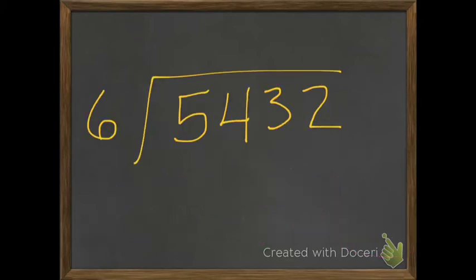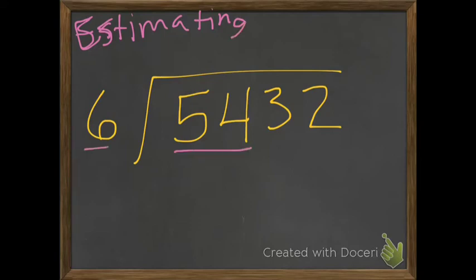Now let's look at this one. This one is a 4 digit. Now we are still estimating, and that means we are using compatible numbers. Anytime we use estimation and division, we always use compatible numbers.